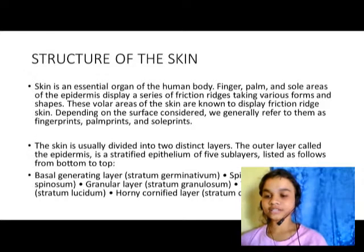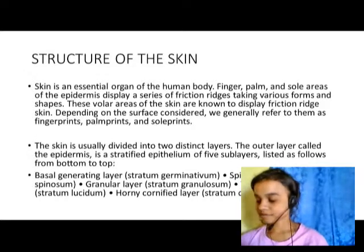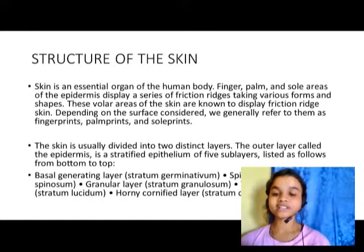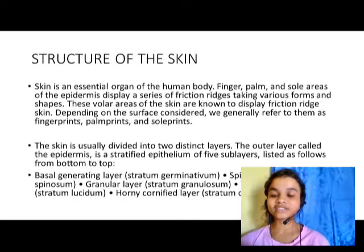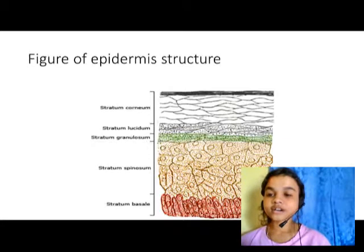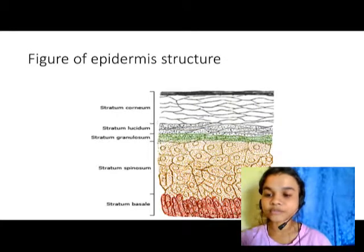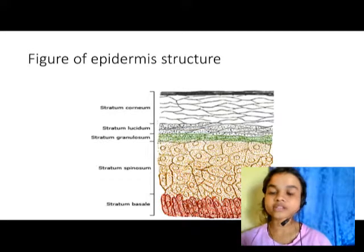The five sub-layers of the epidermis are listed below. These include the basal generating layer, the spinous layer, the granular layer, and a transitional layer — all highly qualified layers that are parts of the epidermis. The structure from outermost to innermost is: stratum corneum, stratum lucidum, stratum granulosum, stratum spinosum, and stratum basale.